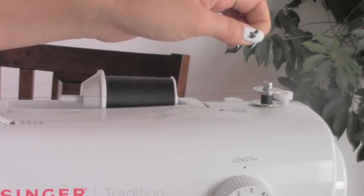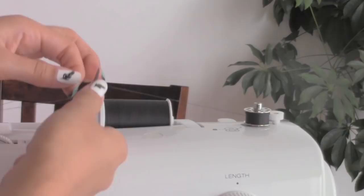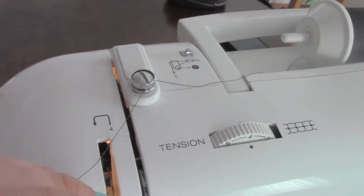Hold on to the thread. After it's been winded up a little bit, you can trim your thread. After it's done winding, cut your thread. Switch the bobbin winder to the left to take out the bobbin.